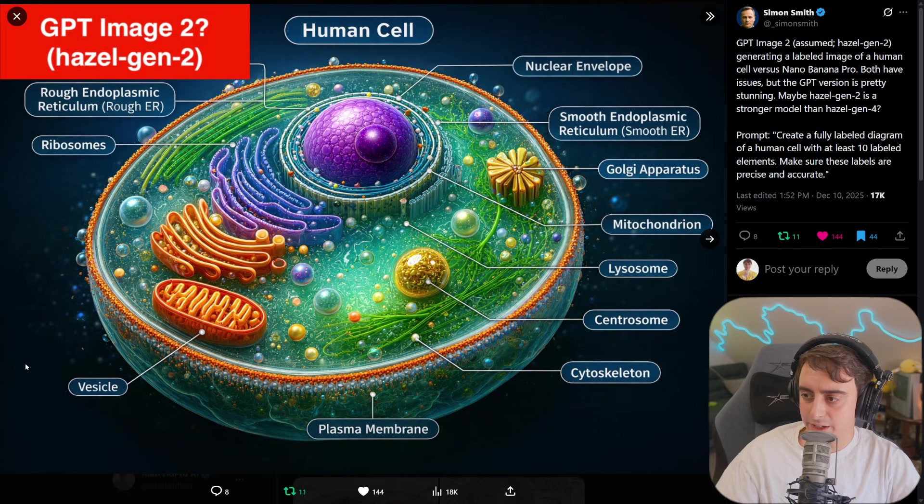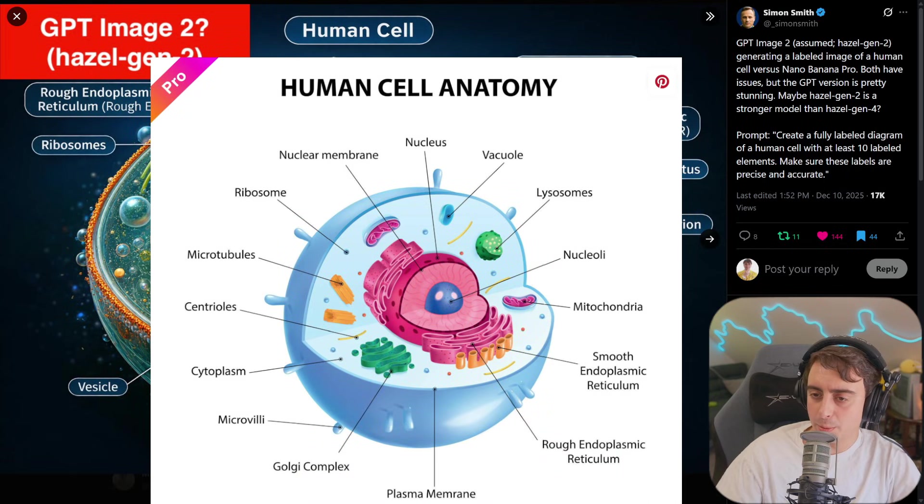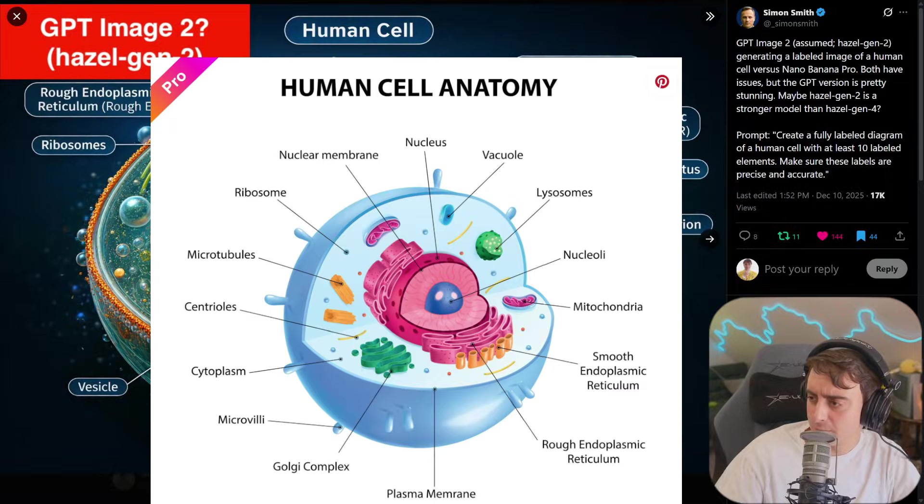It looks like it is mistaking the vesicle here for the mitochondria. Obviously, the mitochondrion is not going to be where the nucleus is. Smooth and rough endoplasmic reticulum are pretty good. Obviously, nucleus here is accurate. Lysosome is also inaccurate. You can see it's kind of like this big green blob here. Instead, lysosome is kind of pointing towards really nothing. It's more just towards the nucleus. I imagine this would be the lysosome. It's calling that a centrosome, which I assume is supposed to be this part right here? The centrioles?